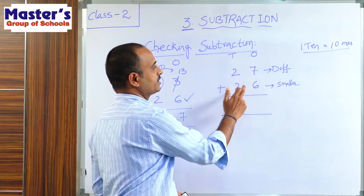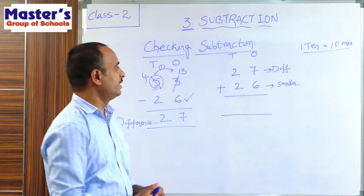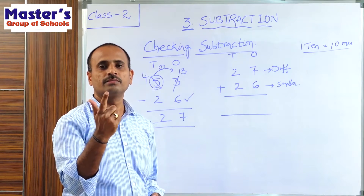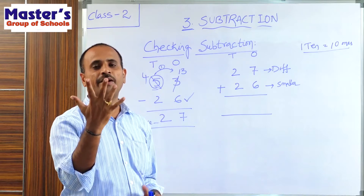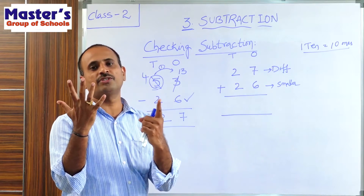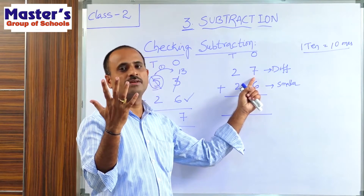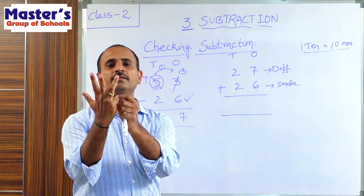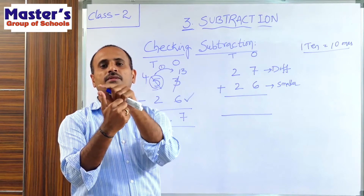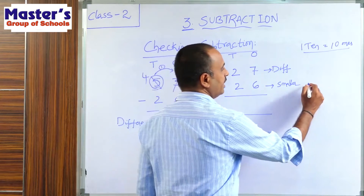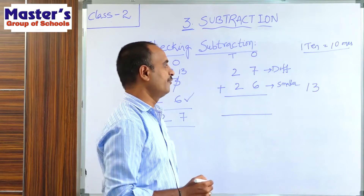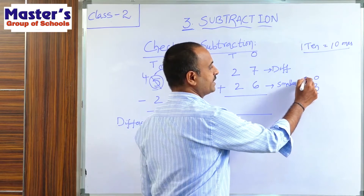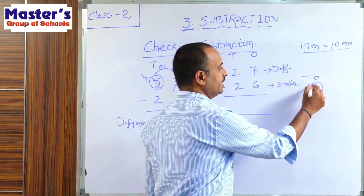Write the places: 7 and 6 are present in the 1's place, 2 and 2 are present in the 10's place. Start addition from the 1's place. 7 and 6 are present in the 1's place. Open 6 fingers; start counting from the first number 7 — after 7 we get 8, so count: 8, 9, 10, 11, 12, 13. The answer is 13. Since 13 has 2 digits, write 3 under the 1's place and carry 1 to the 10's place.